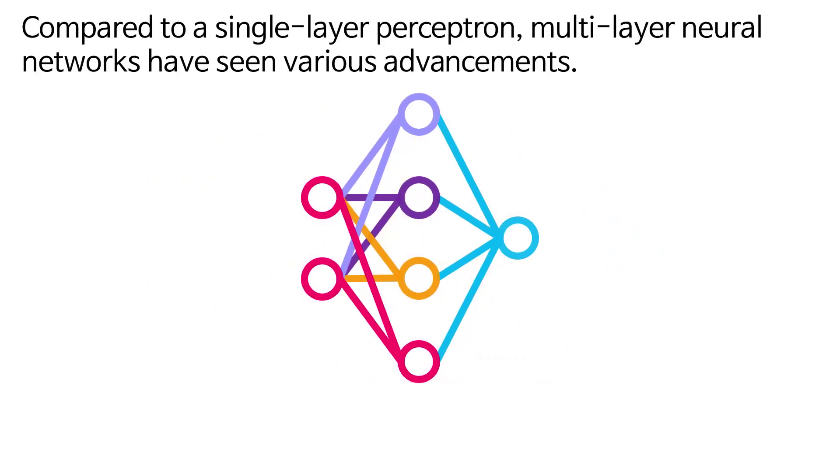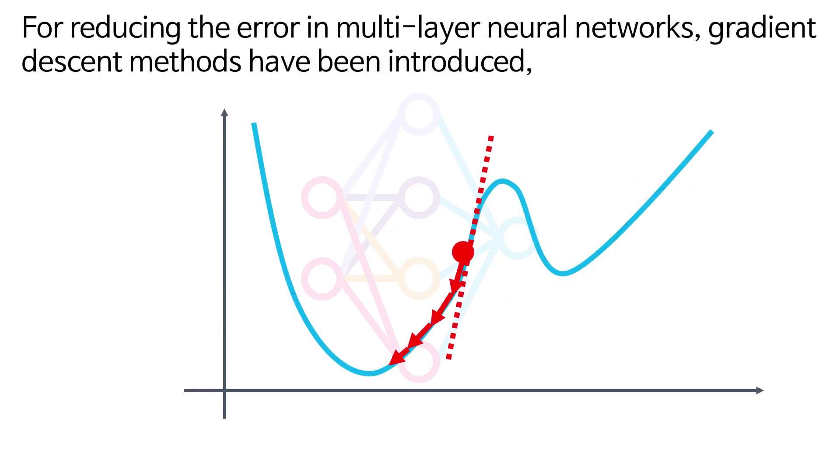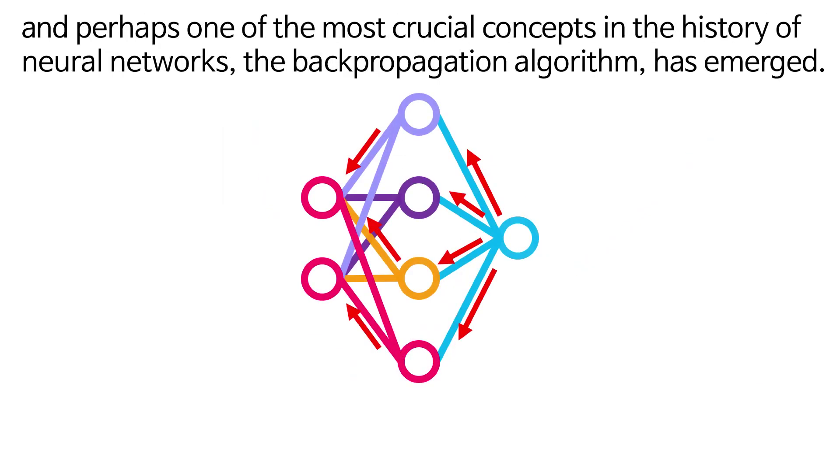Compared to a single-layer perceptron, multilayer neural networks have seen various advancements. Firstly, the activation function transitioned from a step function to more sophisticated functions like sigmoid or tanh. For reducing the error in multilayer neural networks, gradient descent methods have been introduced, and perhaps one of the most crucial concepts in the history of neural networks, the backpropagation algorithm, has emerged.